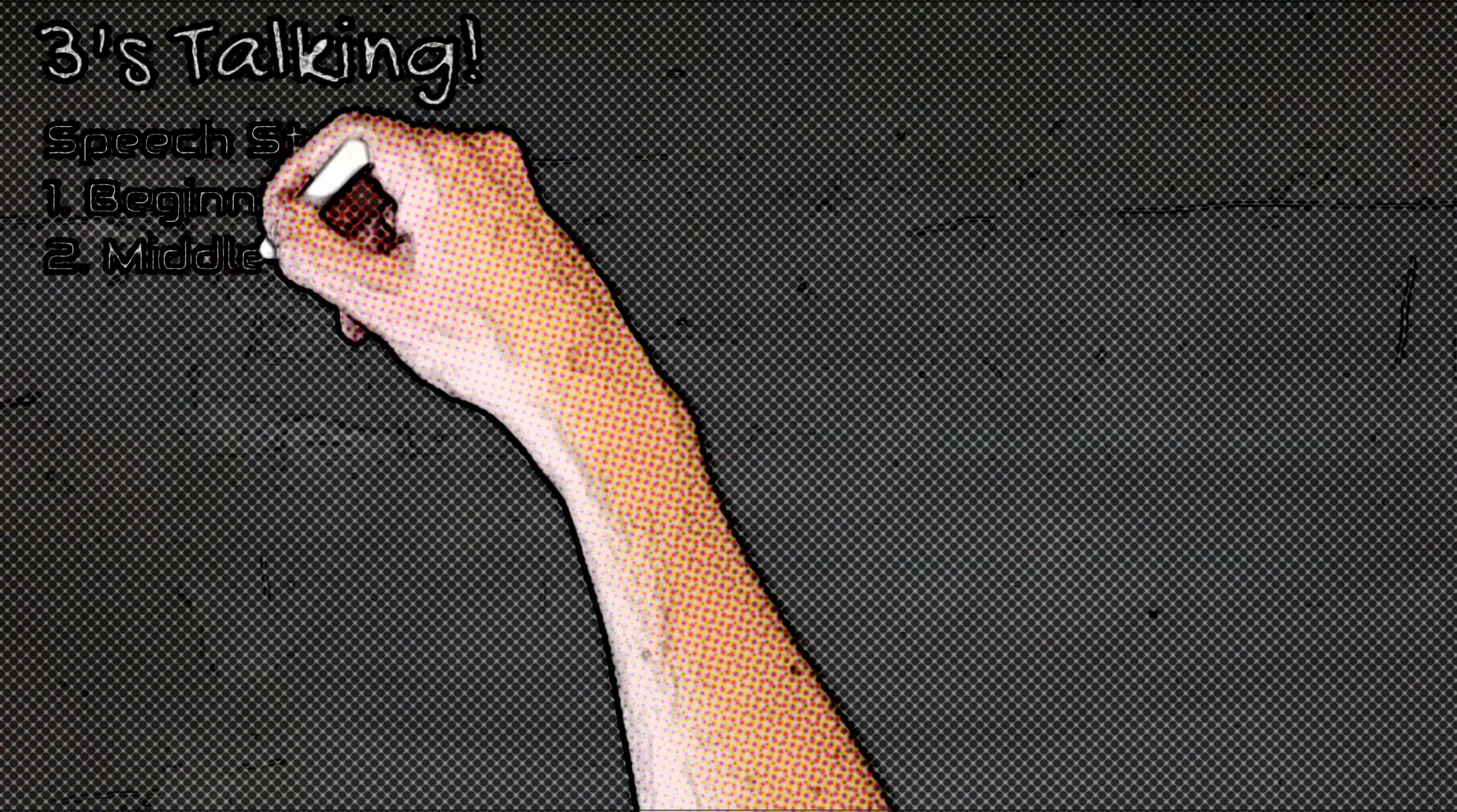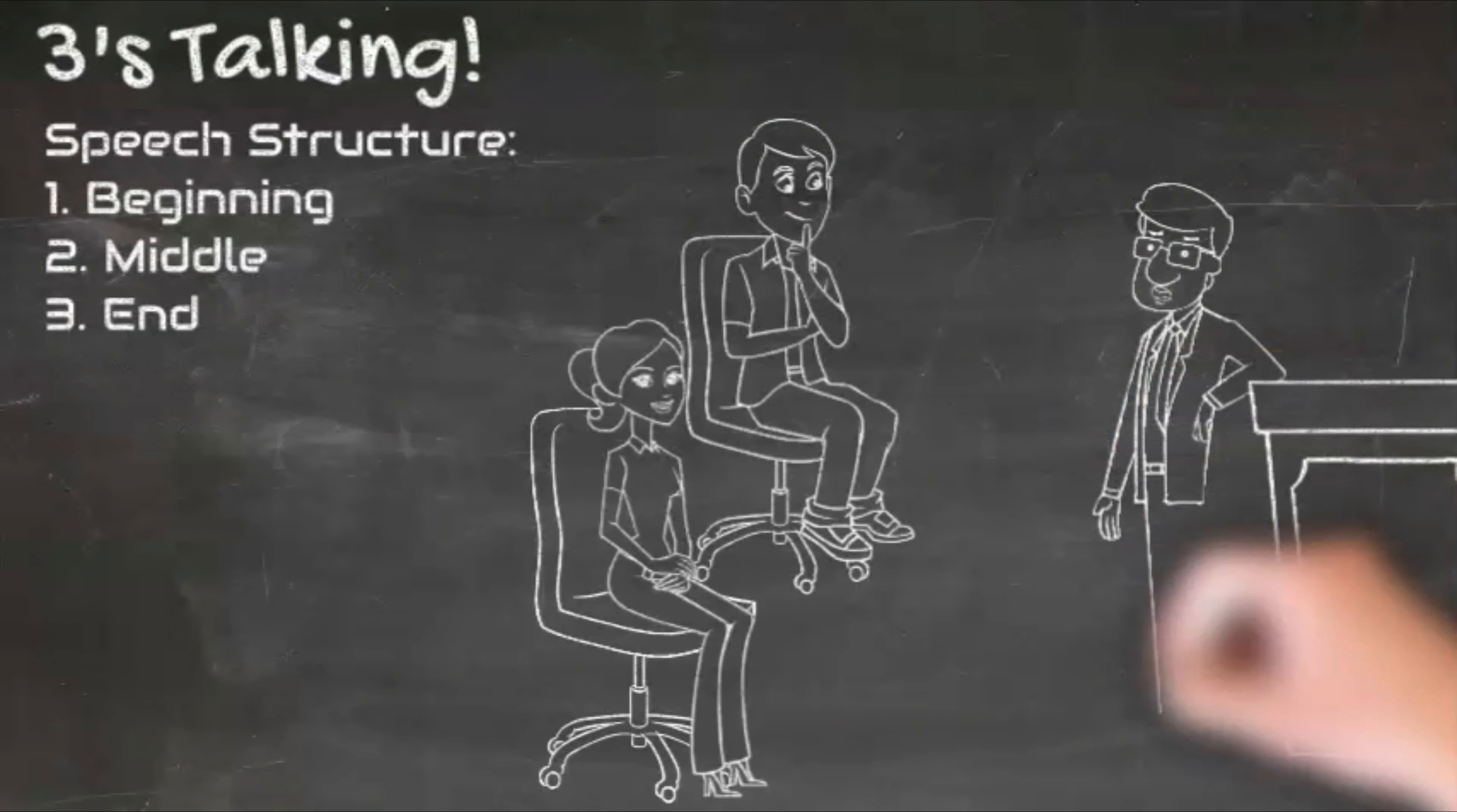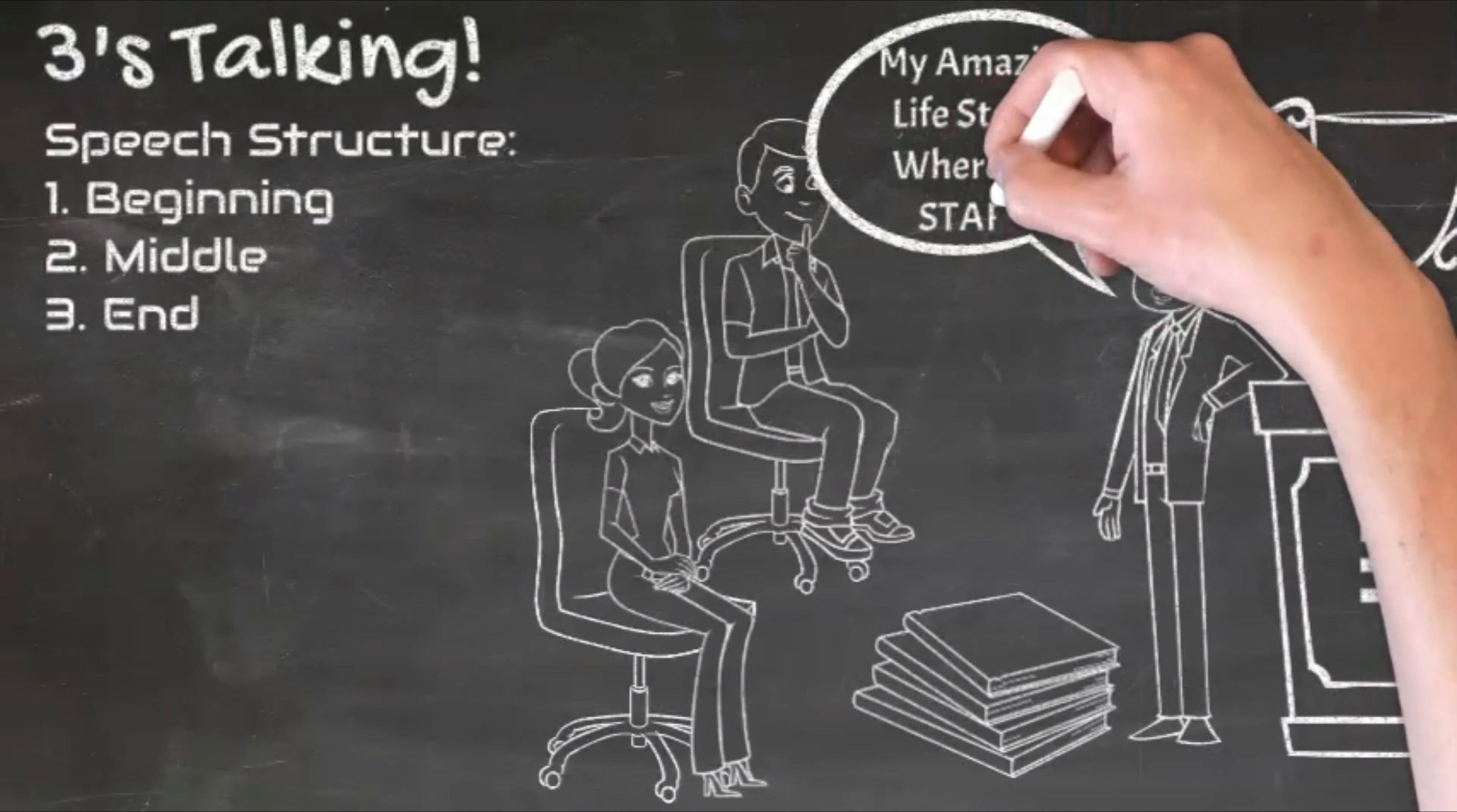I have a dream. I have a dream today. All great speeches have this in common: a structure consisting of three interlinking parts - a beginning, a middle, and an end. My amazing life story, where do I start? When do you stop?